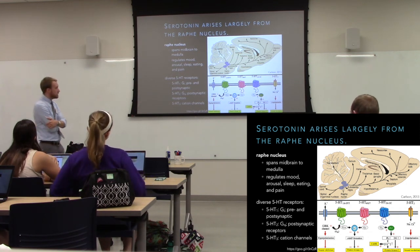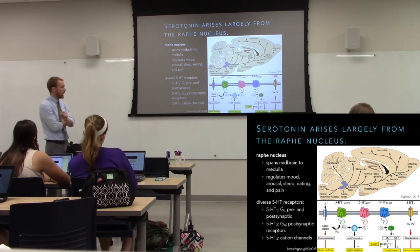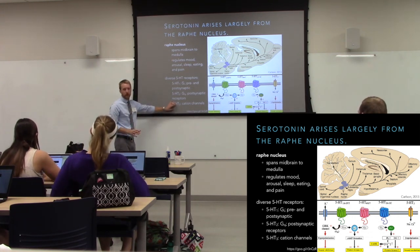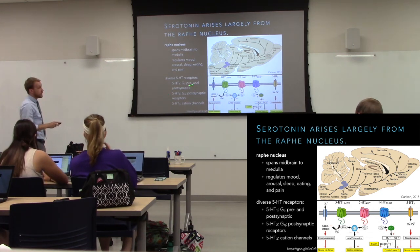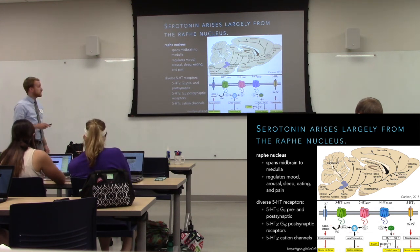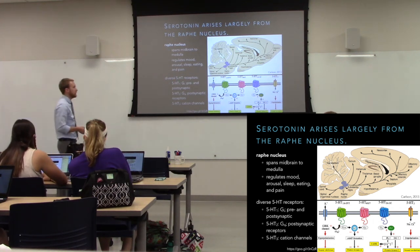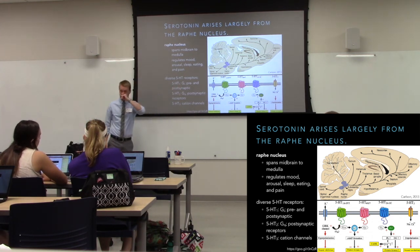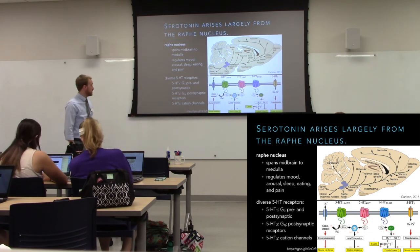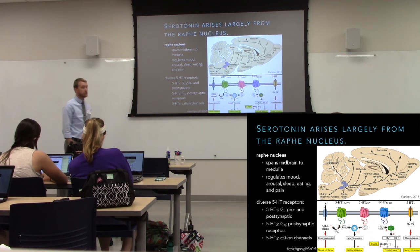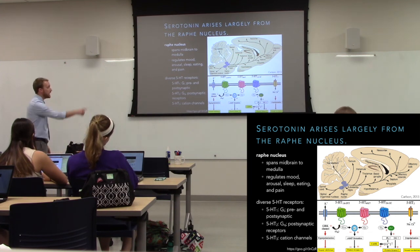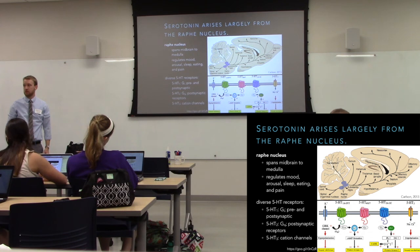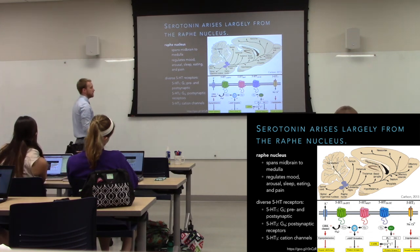Serotonin (5-HT) also has multiple receptor types. There are some cation channel ionotropic receptors, but they're rare. The main metabotropic types: 5-HT1 is GI-coupled — inhibitory, decreasing cyclic AMP and making neurons less excitable. 5-HT2 is GQ-coupled — excitatory, increasing calcium and making neurons more excitable.